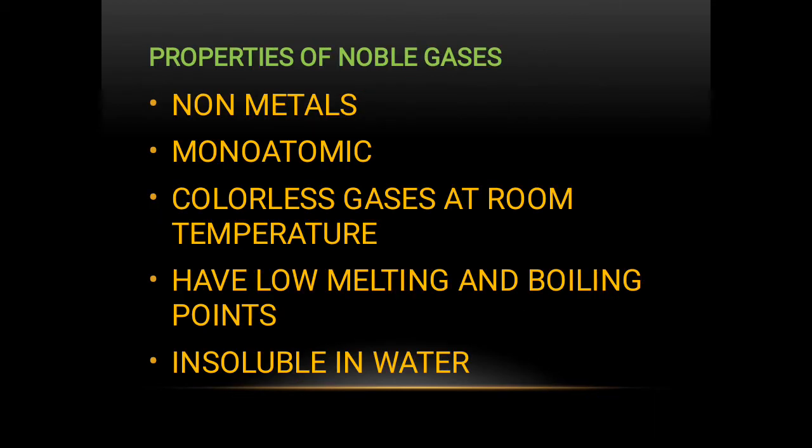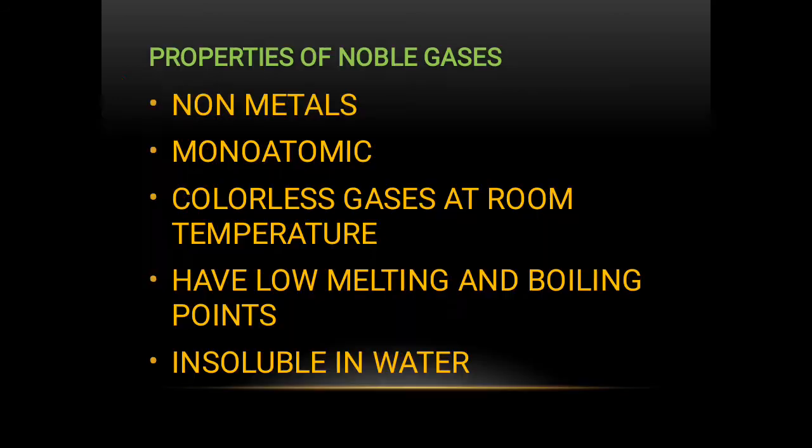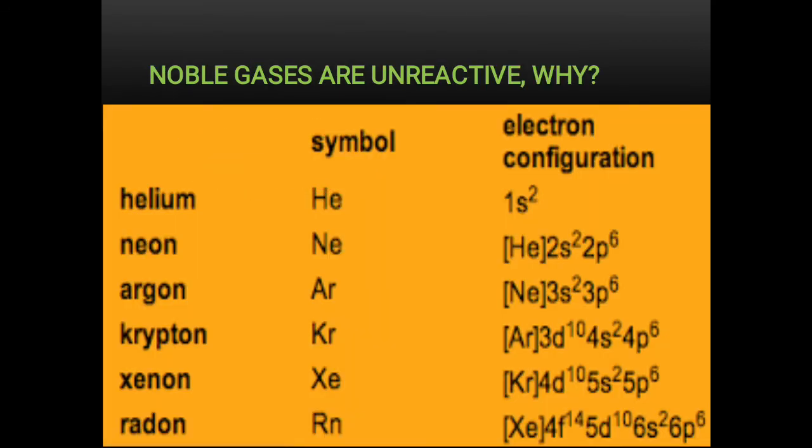Now, we see their properties. They are all non-metallics, means they will never be forming their cations. They exist mono-atomically, means they exist without making a bond with other elements. They are colorless at room temperature. And they have low melting and boiling points because of having totally non-polar nature. And for the same reason, they are insoluble in water.